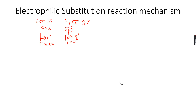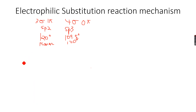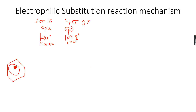Benzene is very unreactive, which is why reactions on it are very slow. Now let's do another example in which we form nitrobenzene. I'm doing these two examples because the halogenation and the nitration of benzene are the only two electrophilic substitution mechanisms they ask you to draw.